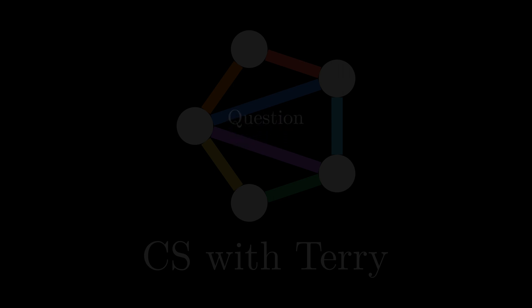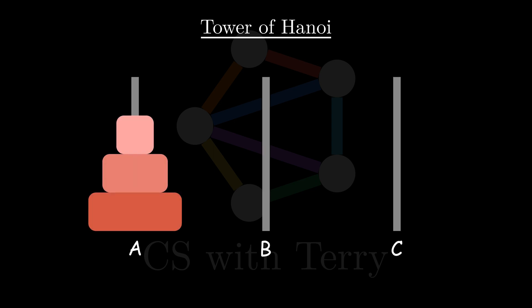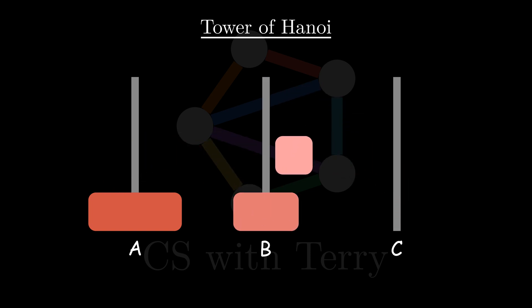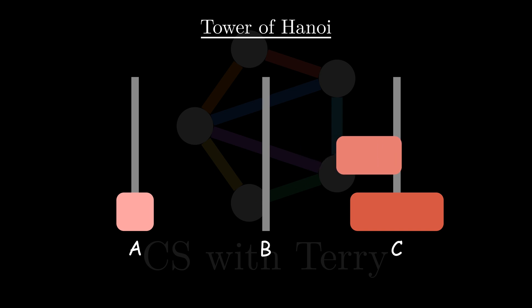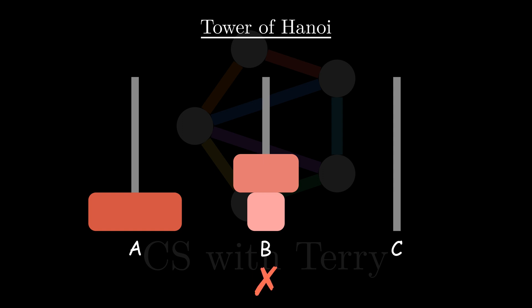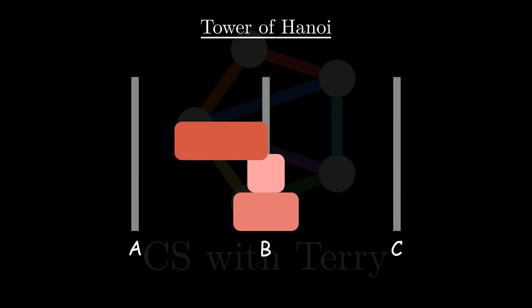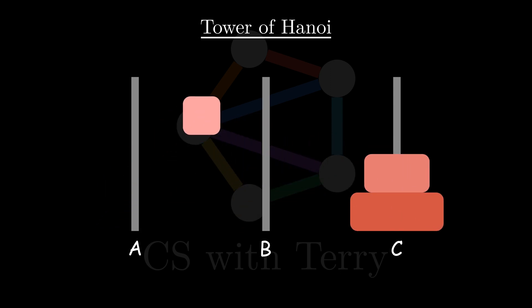Before we end this video, I will leave you with a question. In the tower of Hanoi problem, there are three pegs ABC and N-discs on peg A. The size of the discs increases from top to bottom. Our goal is to move these N-discs to peg C. There are two restrictions: One, we can only move one disc at a time. Two, after moving the disc, the larger discs cannot be placed on top of the smaller discs. How to solve the tower of Hanoi problem recursively? You can think about it, and we'll explain it in the next video.